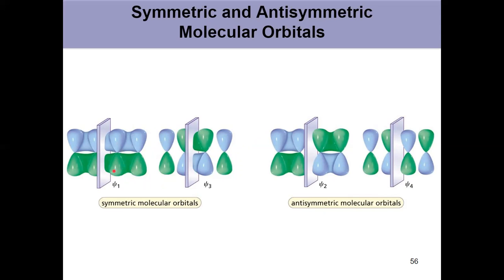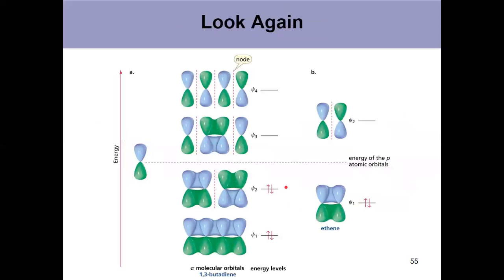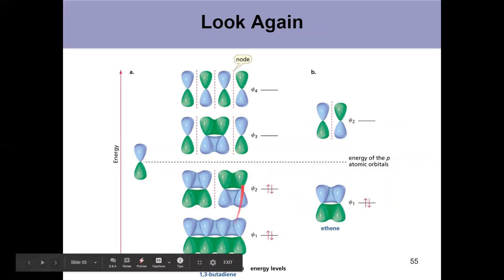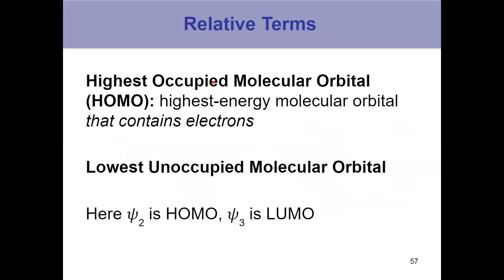We also have molecular orbitals that are symmetric and asymmetric. And another tip, if you're drawing these things, you always alternate things that are symmetric and asymmetric, drawing a plane of symmetry down the middle. This one's symmetric, asymmetric, symmetric, asymmetric. So that's another tip for drawing these things out.